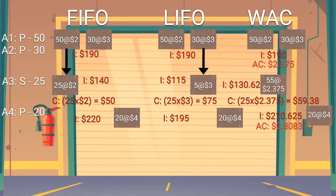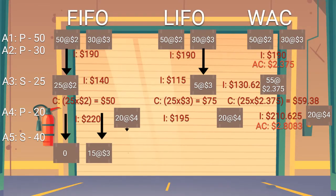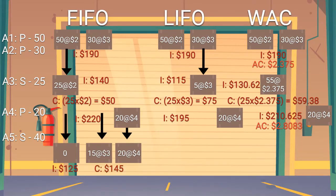Let's make our next activity a sale of 40 lemons. So let's start with FIFO. The first shipment of $2 lemons only has 25 left, so the first 25 comes out of that box. The remaining 15 lemons will come out of the next oldest, which are the $3 lemons. This results in 15 $3 lemons and 20 $4 lemons remaining, meaning our inventory balance is $125. You just have to follow the activity knowing inventory always comes out of the oldest.